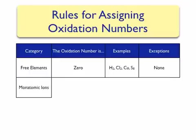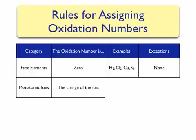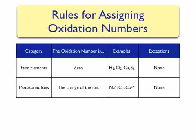The second category is monatomic ions — single atoms that carry a charge. The oxidation number for monatomic ions is simply the charge on the ion. For example, Na⁺ has an oxidation number of plus one; Cl⁻ has an oxidation number of minus one; and Cu²⁺ has an oxidation number of plus two. There are no exceptions to this rule.